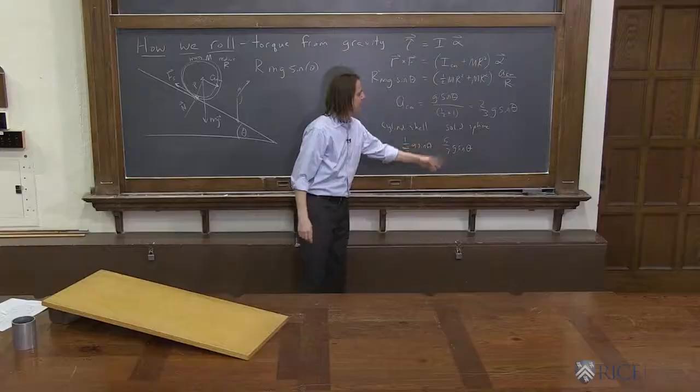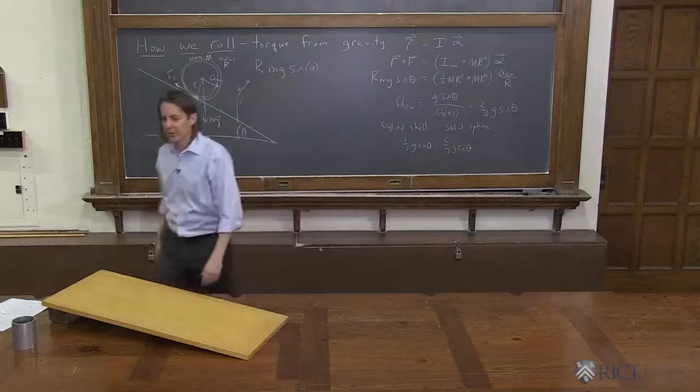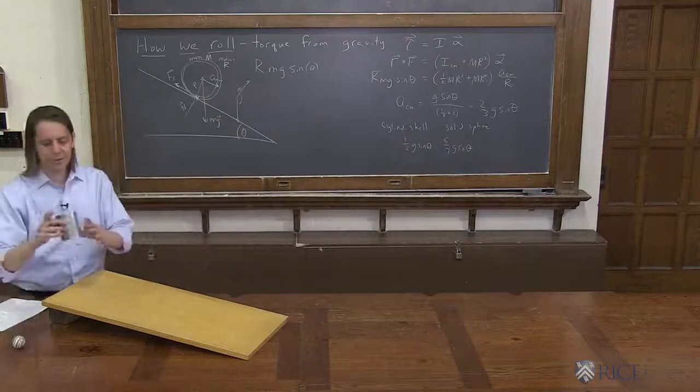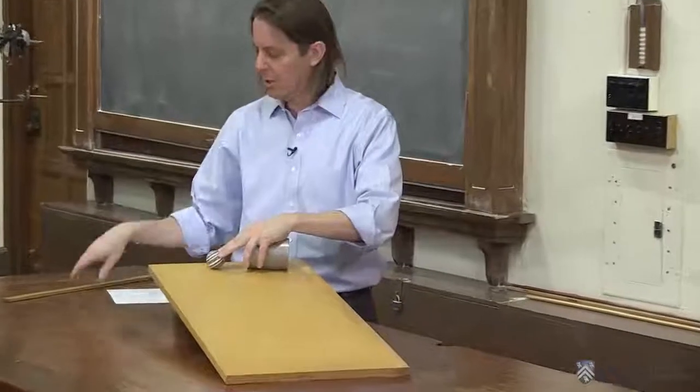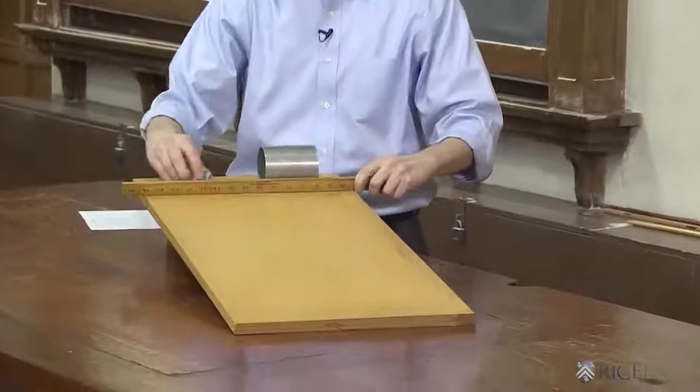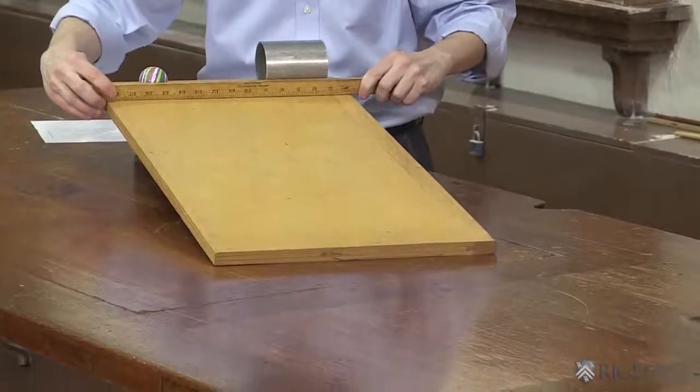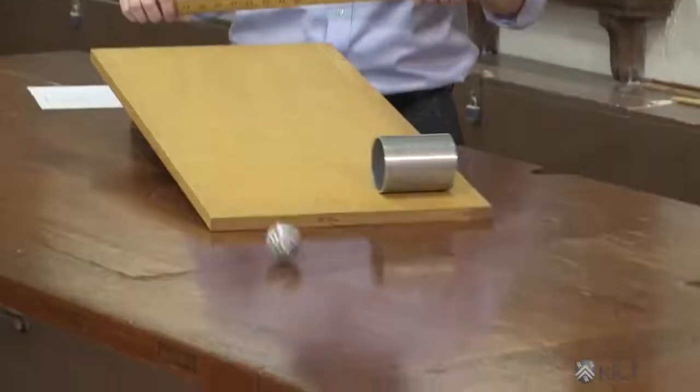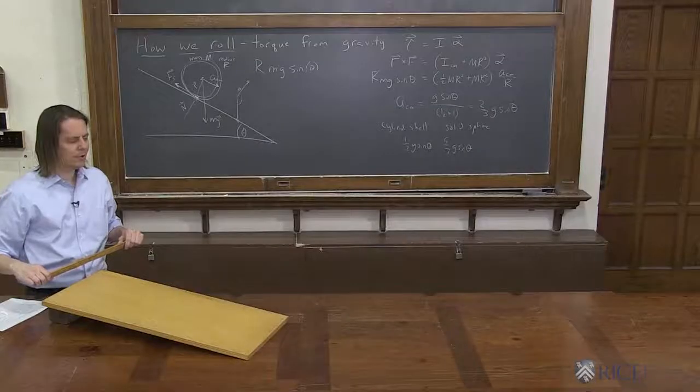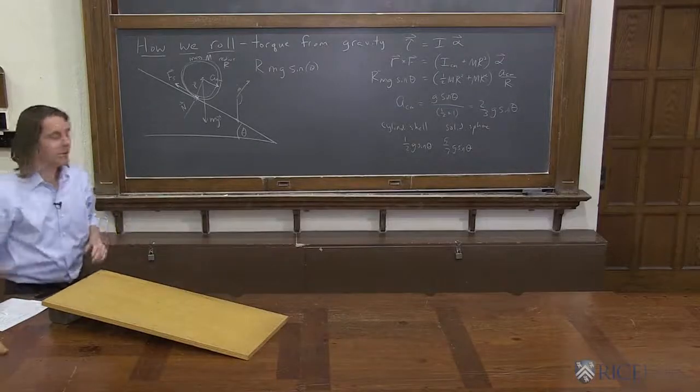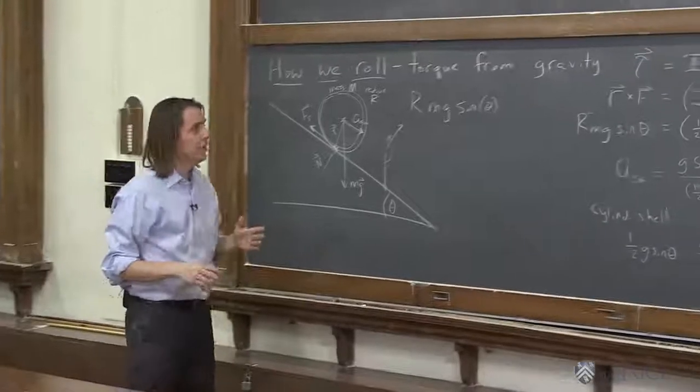So let's see. Completely different materials. Aluminum cylindrical shell, rubber ball, bigger shell than a ball. It doesn't matter. The sphere has to win. Here we go. And the sphere wins. There you go. Newton's law, never wrong.